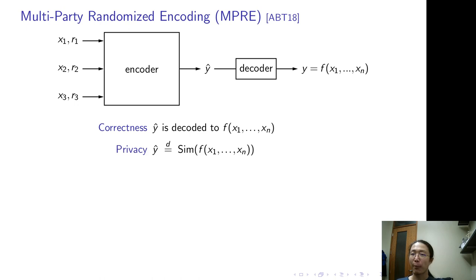MPRE is correct if this always matches the function output. It's private if the encoding can be simulated from the function output. As you might recognize so far, this is the definition of randomizing encoding. For multi-party randomizing encoding, the local randomness can also be simulated. Give the simulator private input for up to T parties - here T is the security threshold. The simulator can simulate the local randomness of the corresponding party.